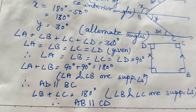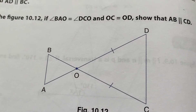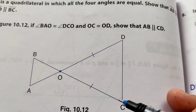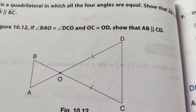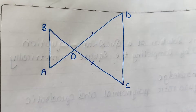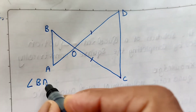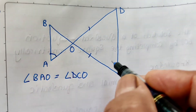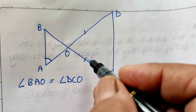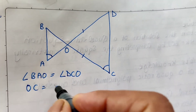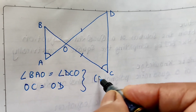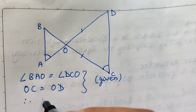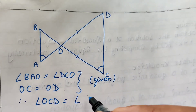Question 6: In figure 10.12, angle BAO equals angle DCO, and OC equals OD. Show that AB is parallel to CD. Since OC equals OD (given), by the isosceles triangle property, angle OCD equals angle ODC. These are the base angles of the isosceles triangle. So the angles at C and D are equal.